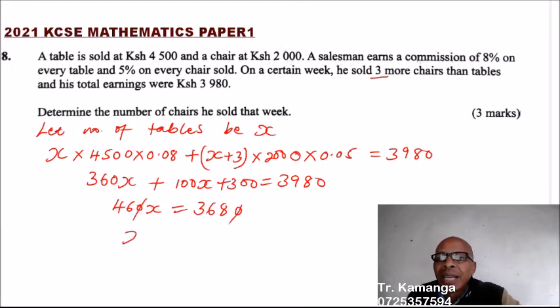That is 3680. Then you divide by 460. So you say X equals 3680 divided by 460. When you divide, that is 3680 divided by 460, that should give you 8, X equals 8.